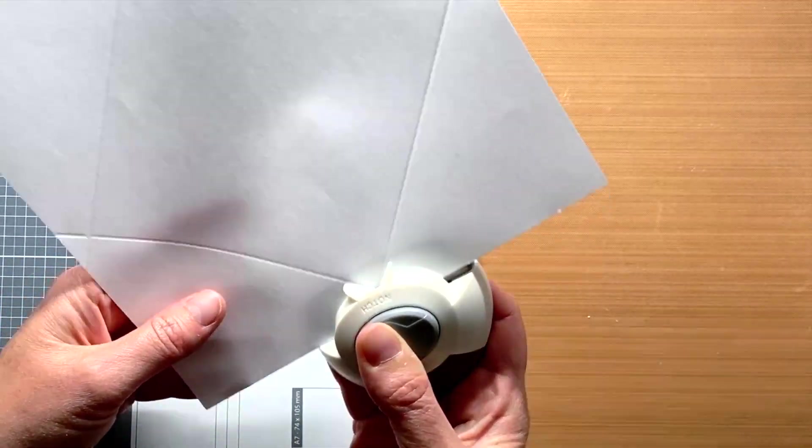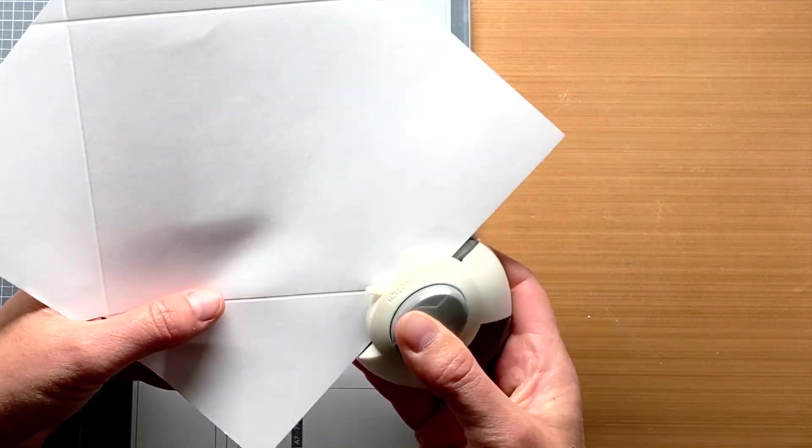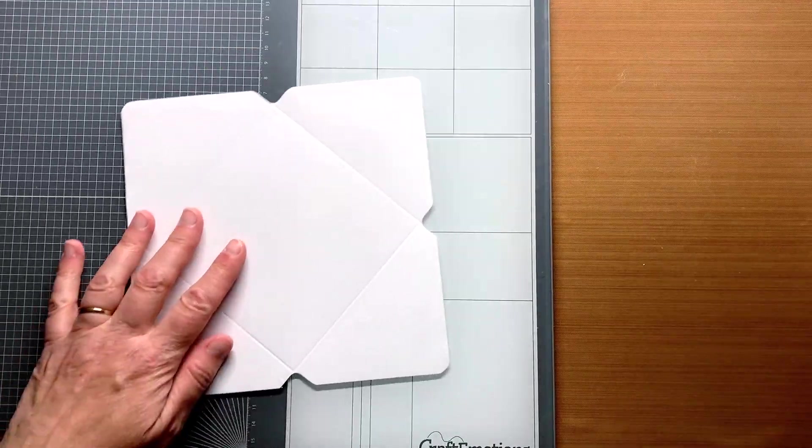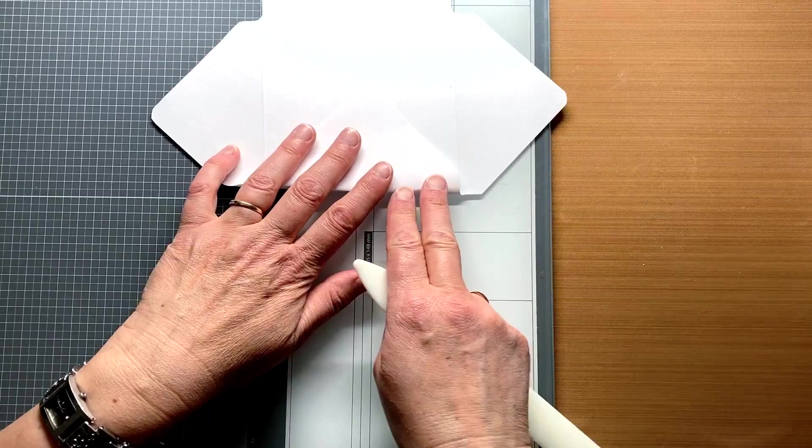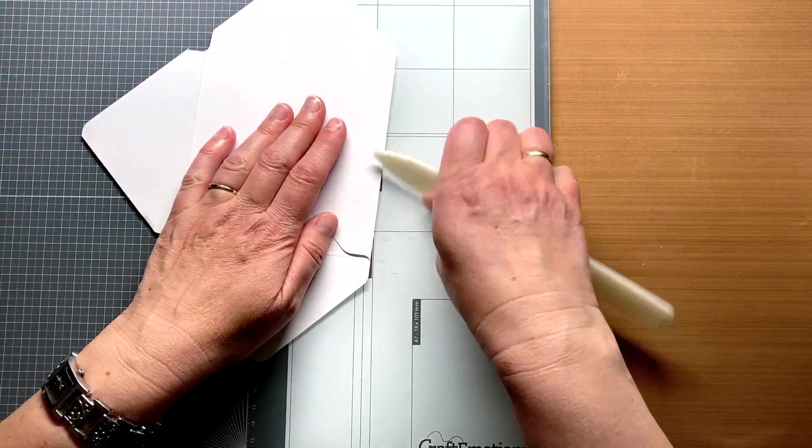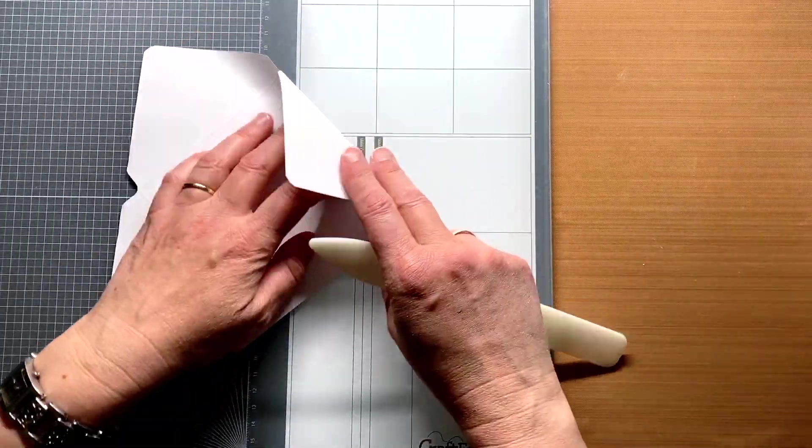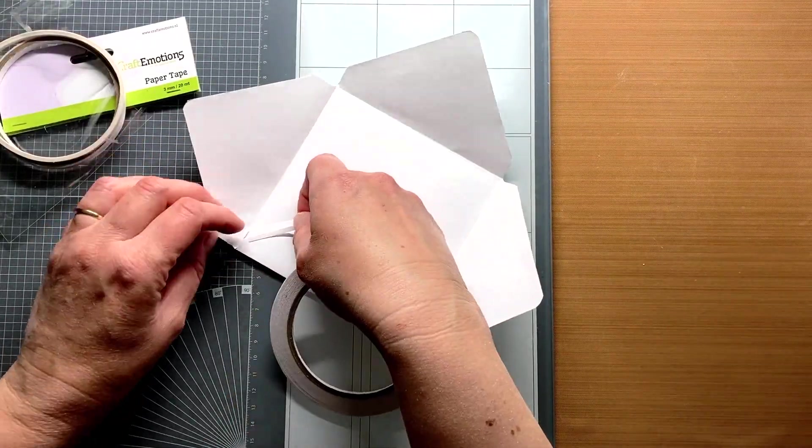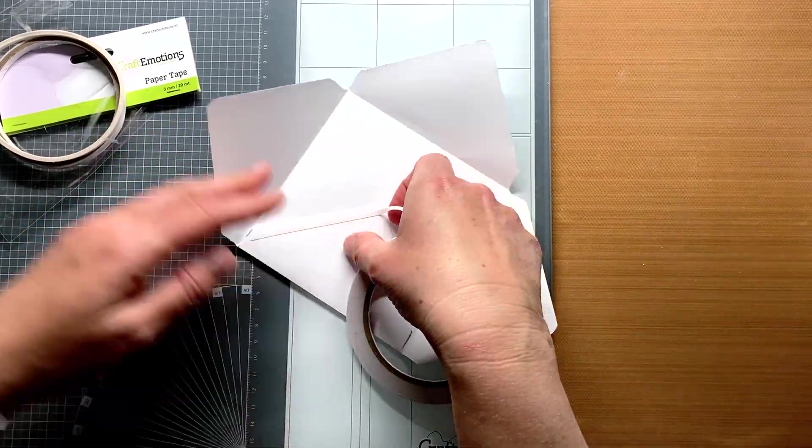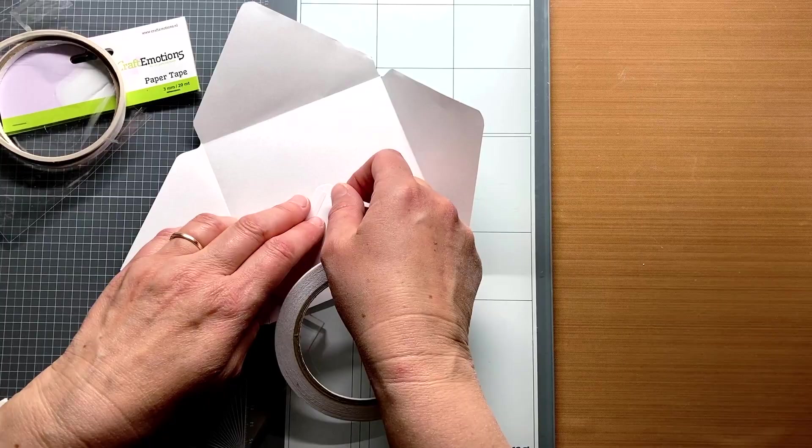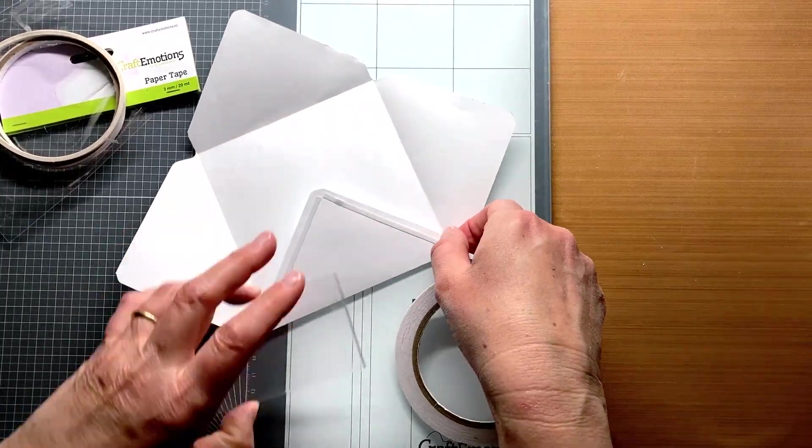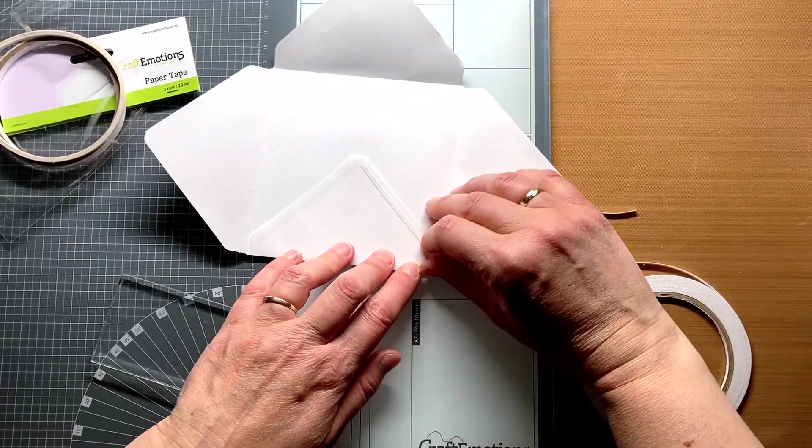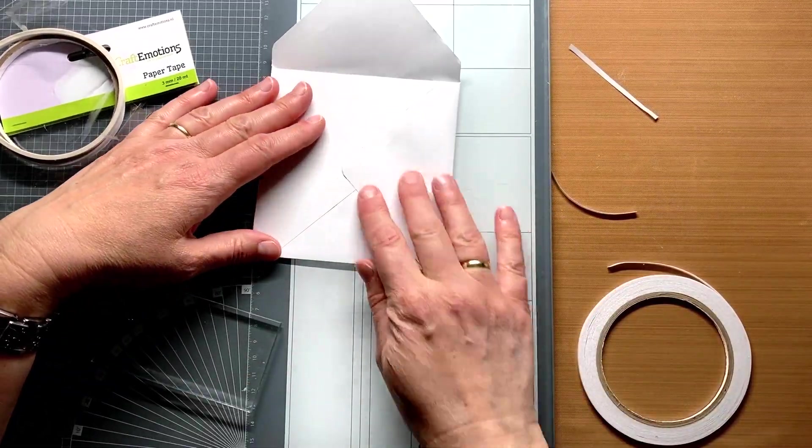I use a corner punch to punch the notches and corners. But if you don't have one, you can just use scissors. The seams we fold over to the back. I use double sided tape to seal the envelope at the bottom. Unfortunately I stick the tape on the wrong part. Later you will see that the bottom is fold over the wrong way. But ok, it can be closed.